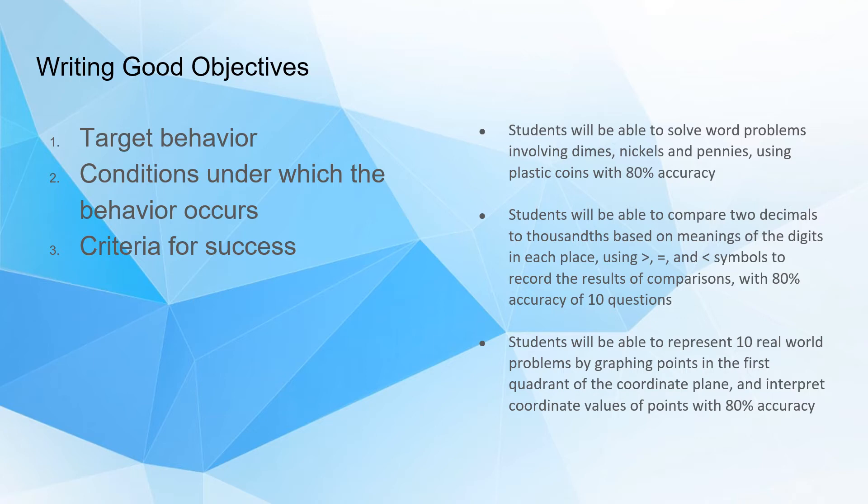We want three aspects to our objective. When you've developed those three aspects, you've pretty much got your lesson plan figured out — you just add details to the lesson plans.